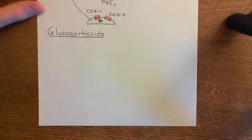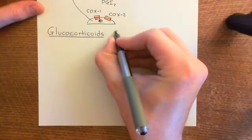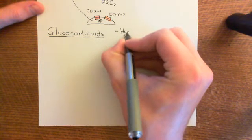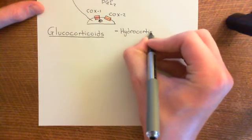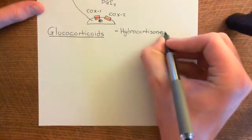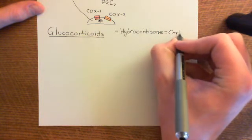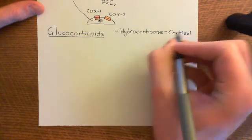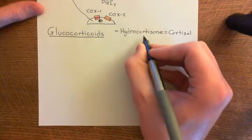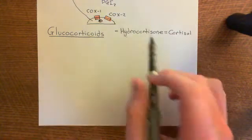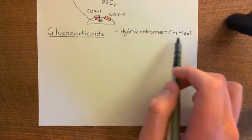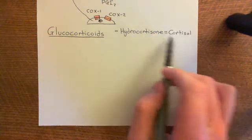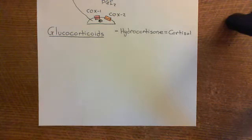Let's go over some examples of glucocorticoids. A very famous example is the drug hydrocortisone, which is actually the same thing as cortisol. Hydrocortisone is the name of the drug — if you are prescribed it, it will be called hydrocortisone rather than cortisol. When your adrenal glands make it naturally, it's called cortisol, but they can be used interchangeably.